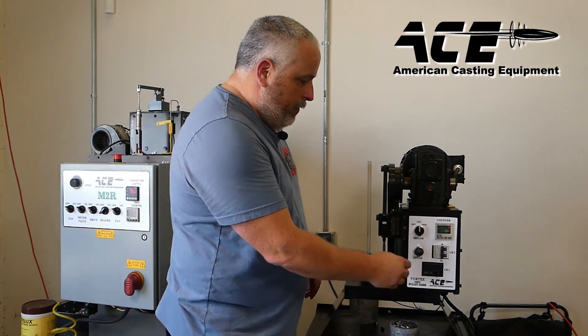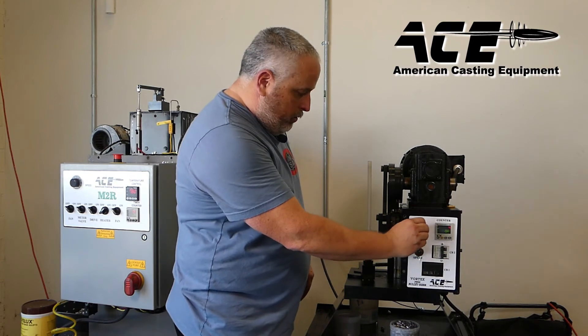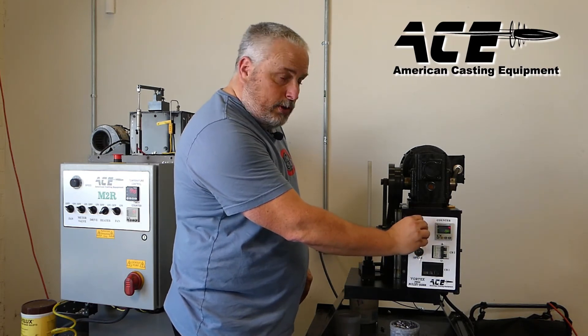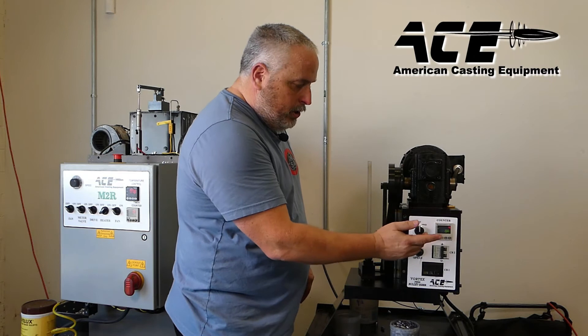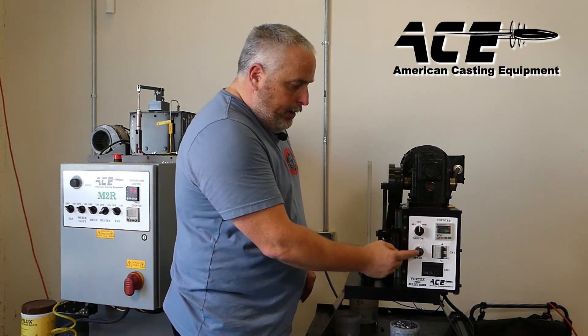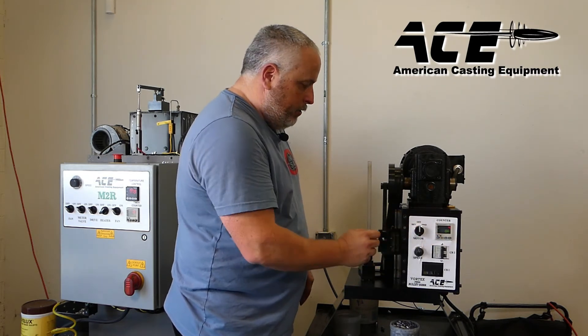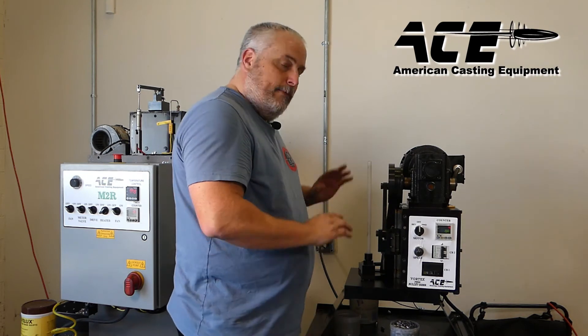And breaker's here to turn it on and off. You've got a reverse switch. If you did get something stuck, you could reverse it out that way. But normally you're just going to run in the forward mode. And you've got your rheostat here to adjust how fast you're going to run the machine.